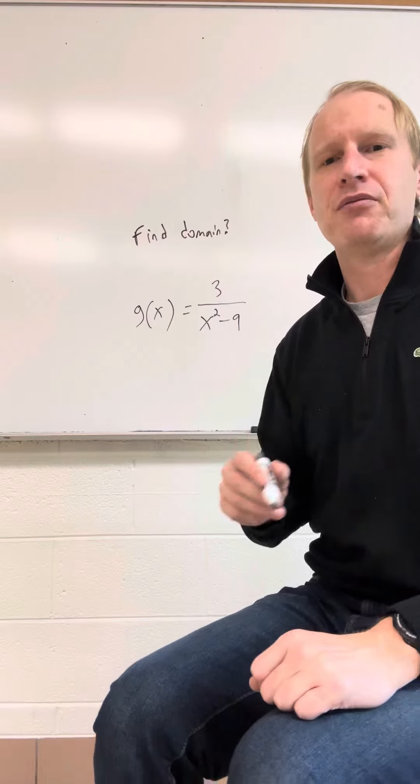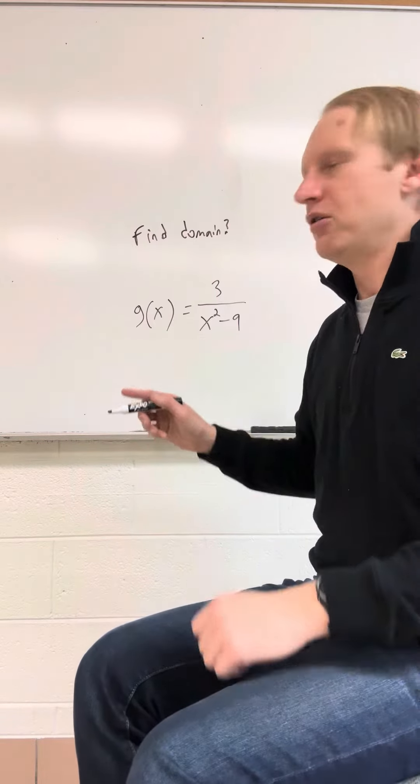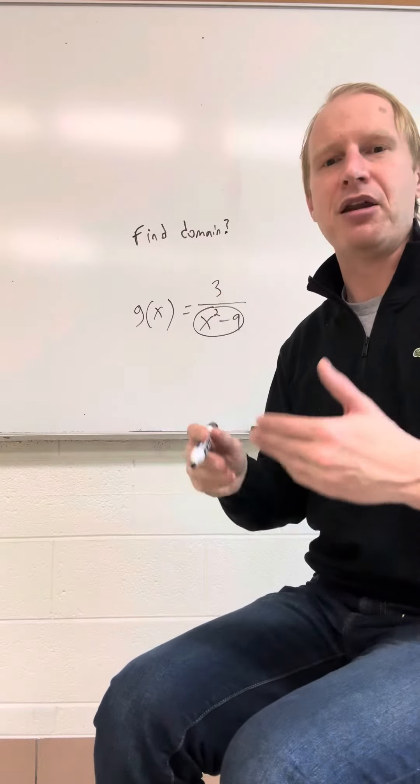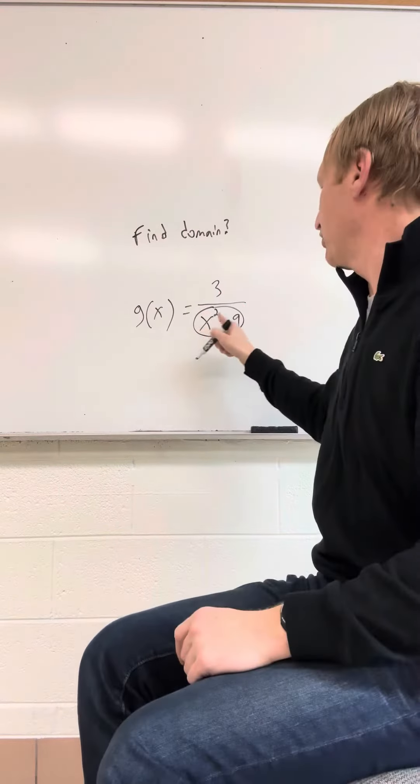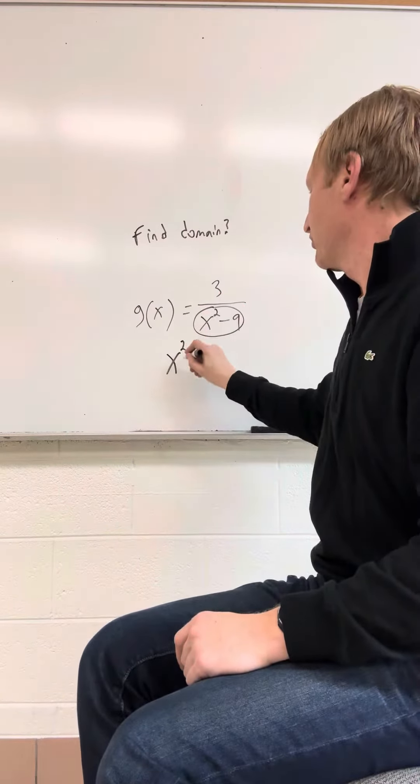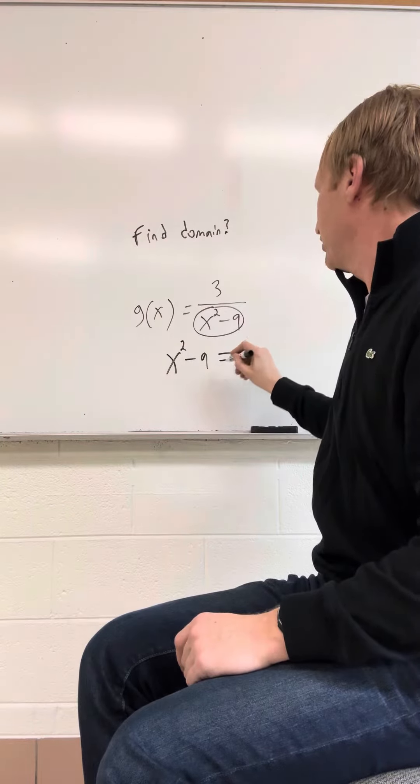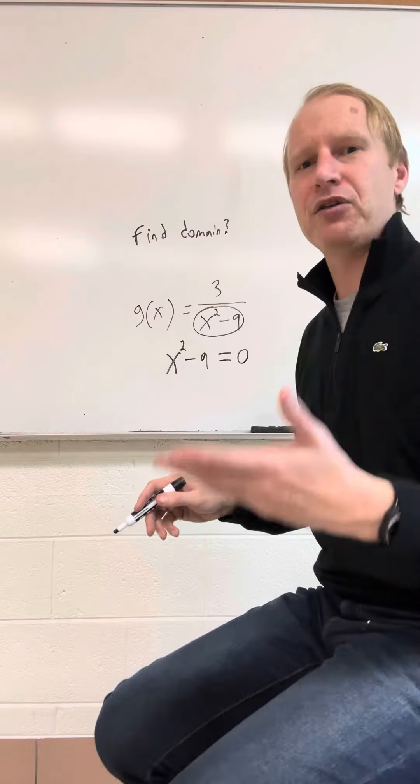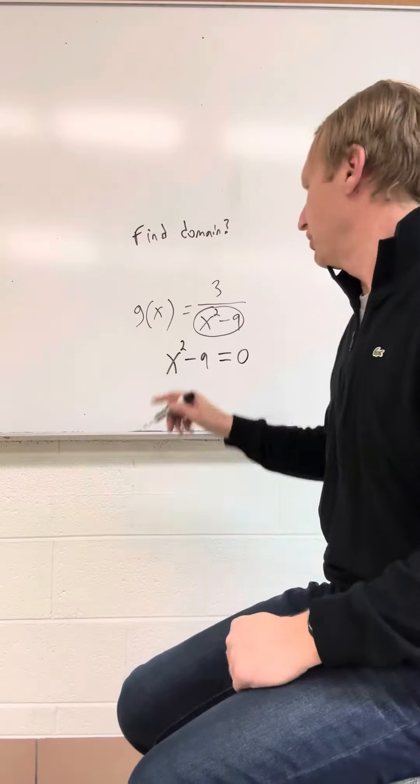And what we're going to do here is to find the domain, we can't have zero on the bottom. So zero cannot be on the bottom of the fraction. So we set whatever's on the bottom equal to zero. And we want to solve it, and those values cannot be in the domain.